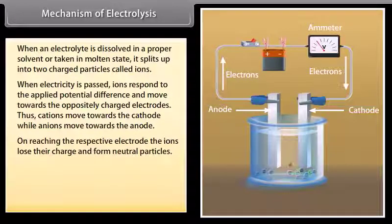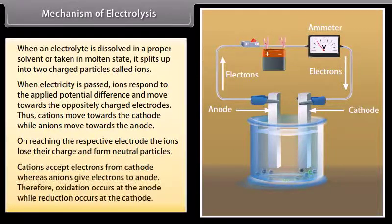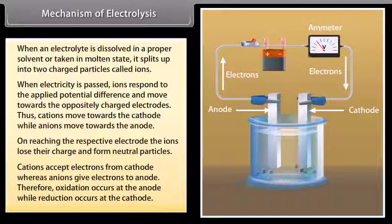On reaching the respective electrode, the ions lose their charge and form neutral particles. Cations accept electrons from cathode whereas anions give electrons to anode. Therefore, oxidation occurs at the anode while reduction occurs at cathode.